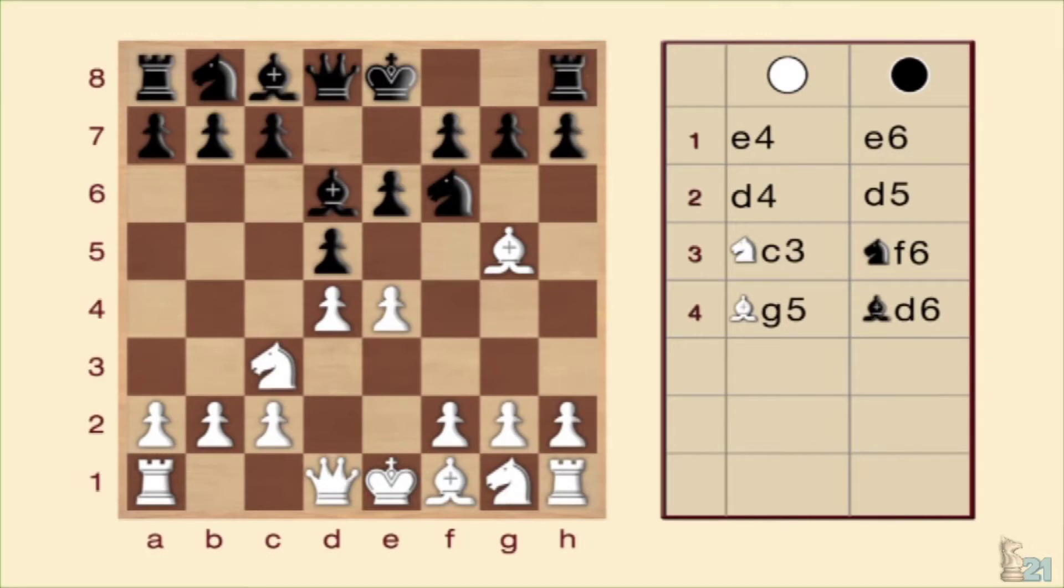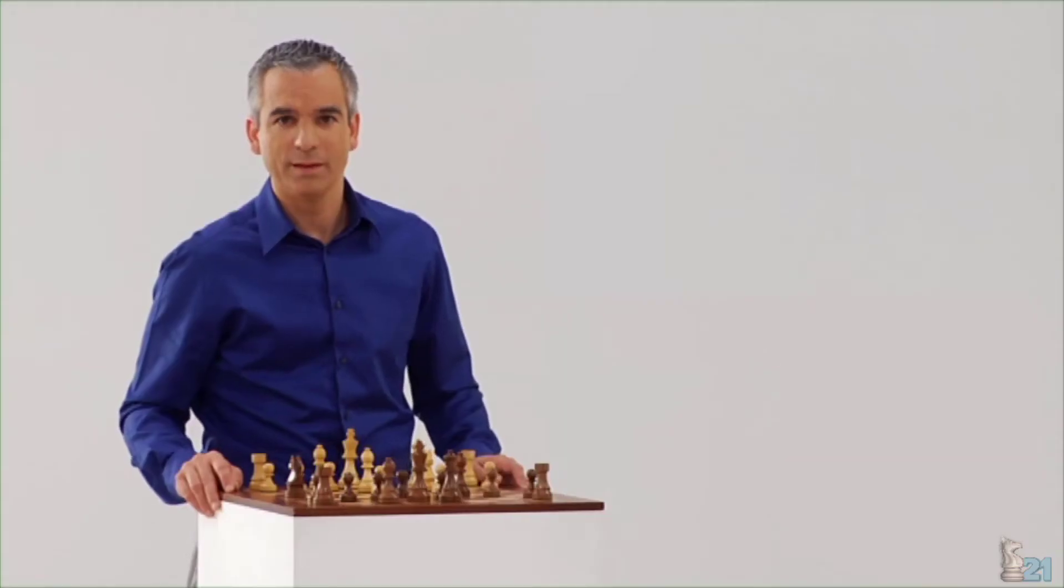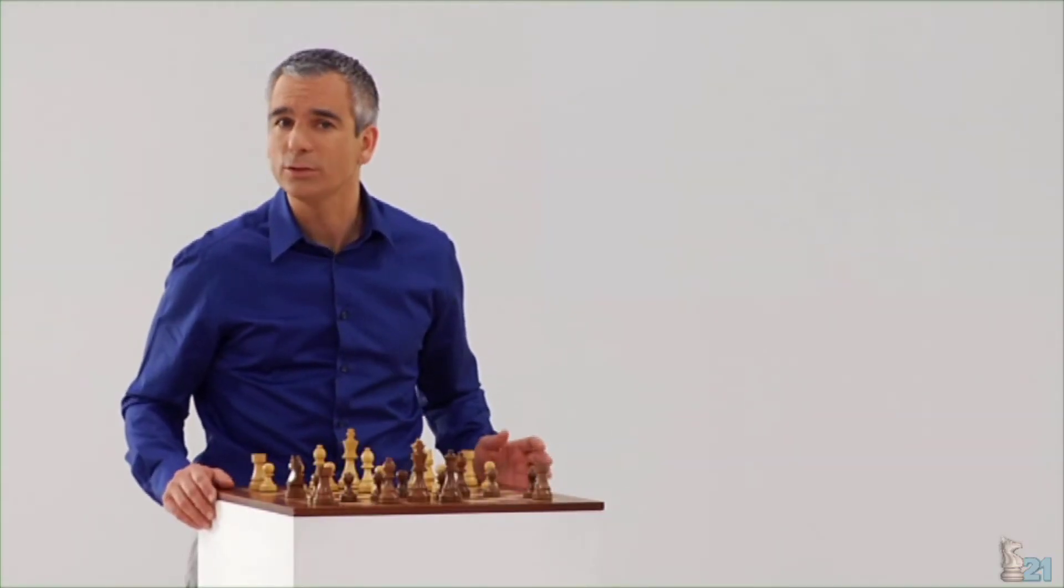Aparentemente, ambas piezas parecen bien situadas. Pero de ningún modo es así, ya que han quedado a tiro de un ataque doble de peón enemigo. Ya veis que hay que estar muy atentos a este tipo de situaciones. Como habréis deducido, en este caso no era un jaque doble, sino un ataque doble, ya que el peón atacaba a dos piezas pero ninguna de ellas era el rey.